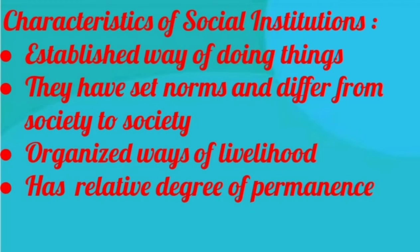If each member does not follow the norms, there would be chaos. To avoid that, har institution ka ek degree of permanence rehti hai — the norms set within an institution stay. For example, Hindus me alag norms hain, Muslims me alag hain, Sikhs me alag hain — they have different patterns of living. So it is an organized way of living, or in other words we can say livelihood. It also has a relative degree of permanence and transmits social heritage.